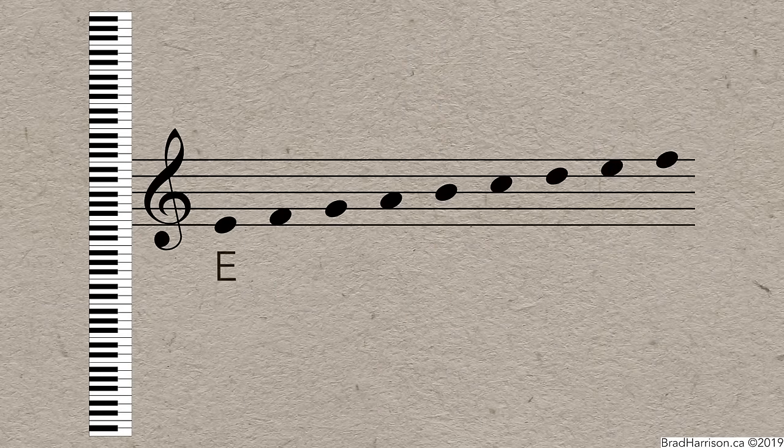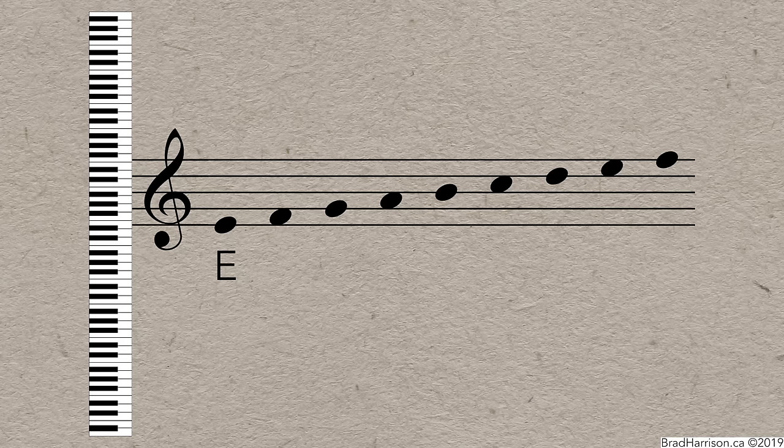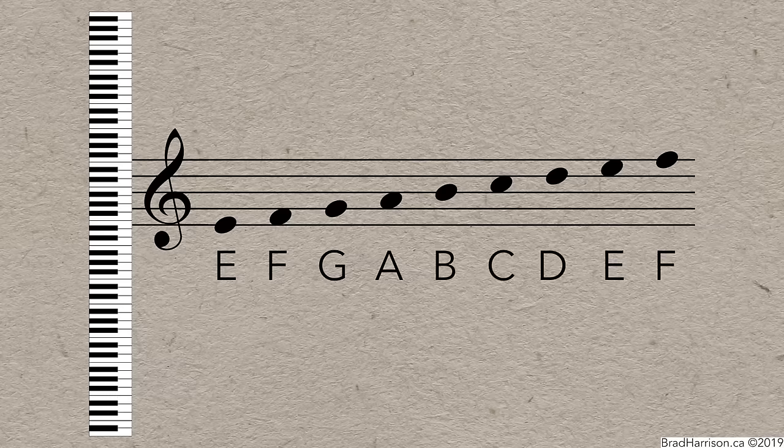Let's start with the treble clef. The bottom note of the treble clef is E, and every successive space or line goes to the next note in the musical alphabet. F, G, A, B, C, D, E, and F.